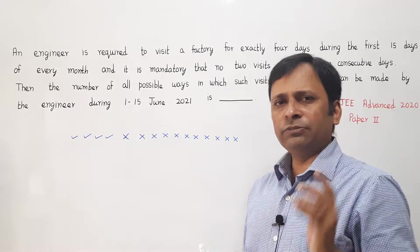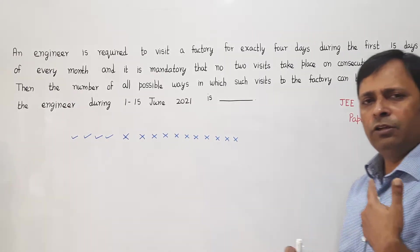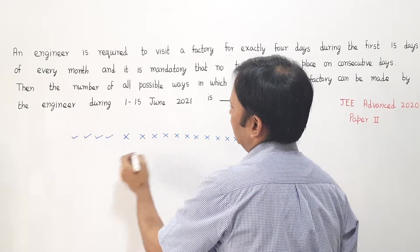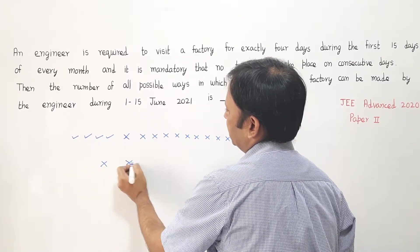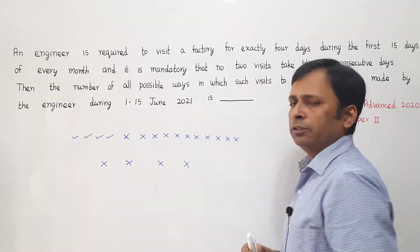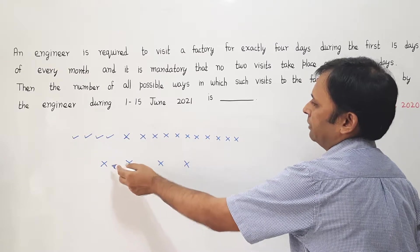Now the easiest way to approach this question is to use the gap method. What we do in the gap method is place the 11 crosses first because there is no restriction on crosses. The only restriction is on the ticks, that 2 ticks are not consecutive.